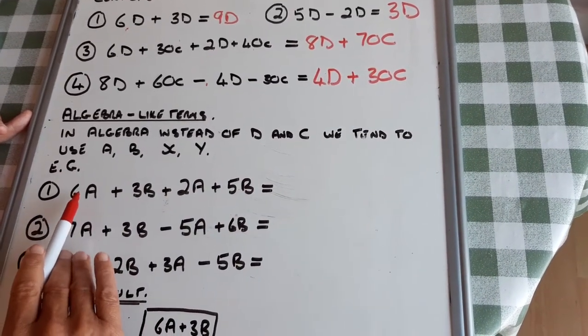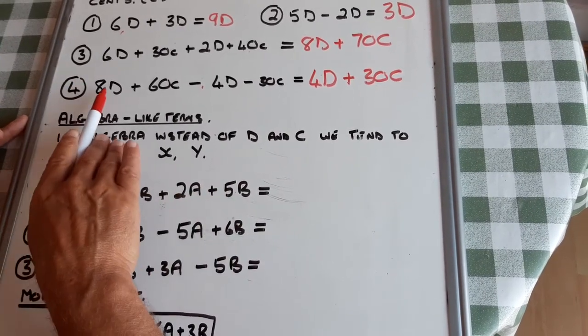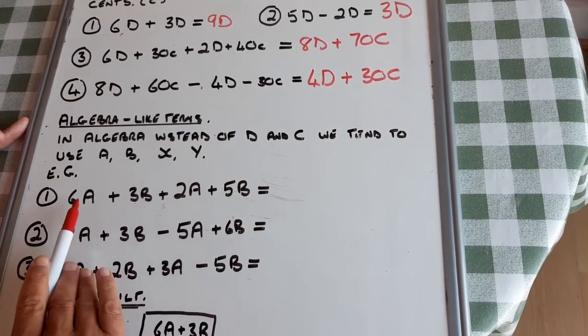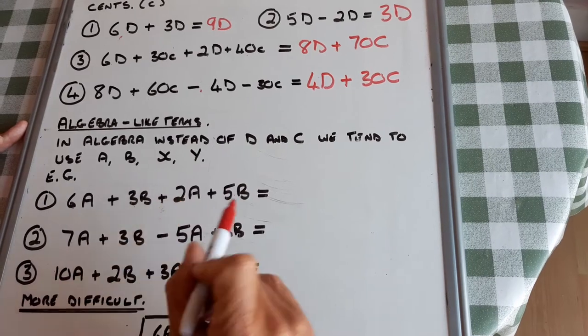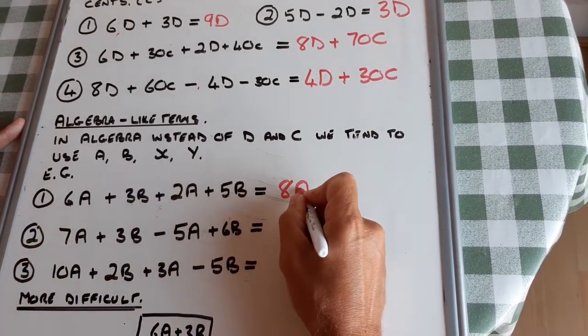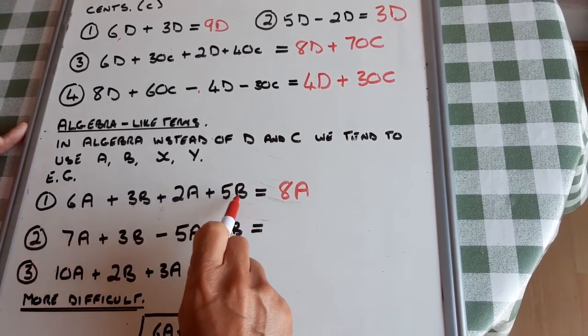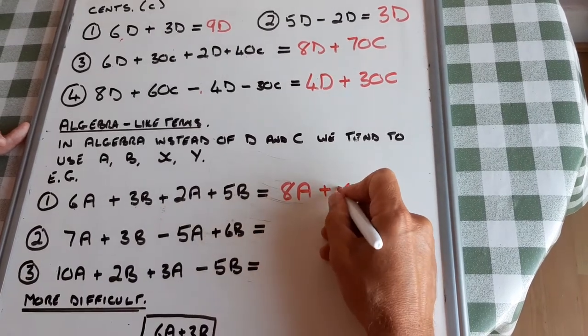I need to keep my A's and B's separate, because they're different, like dollars and cents are different. So six A plus two A is eight A. Three B plus five B is eight B.